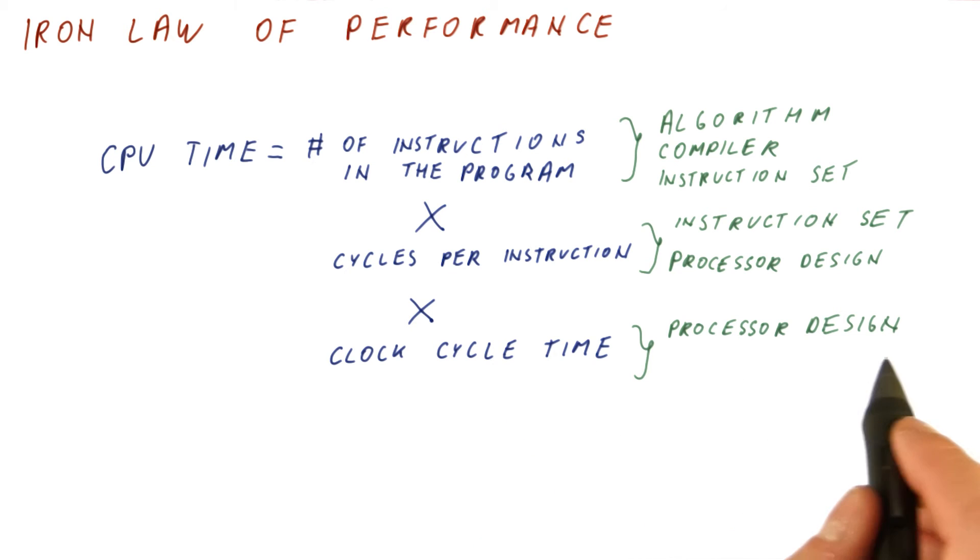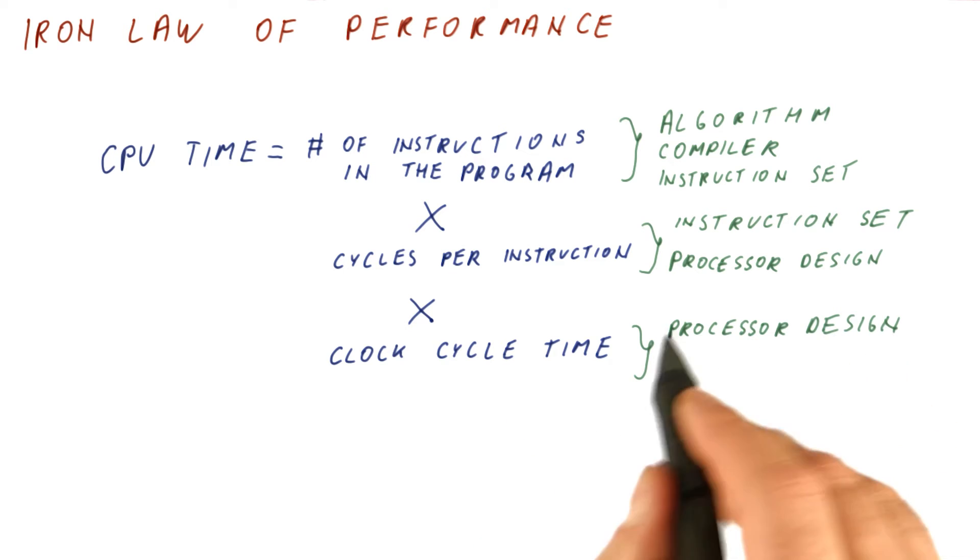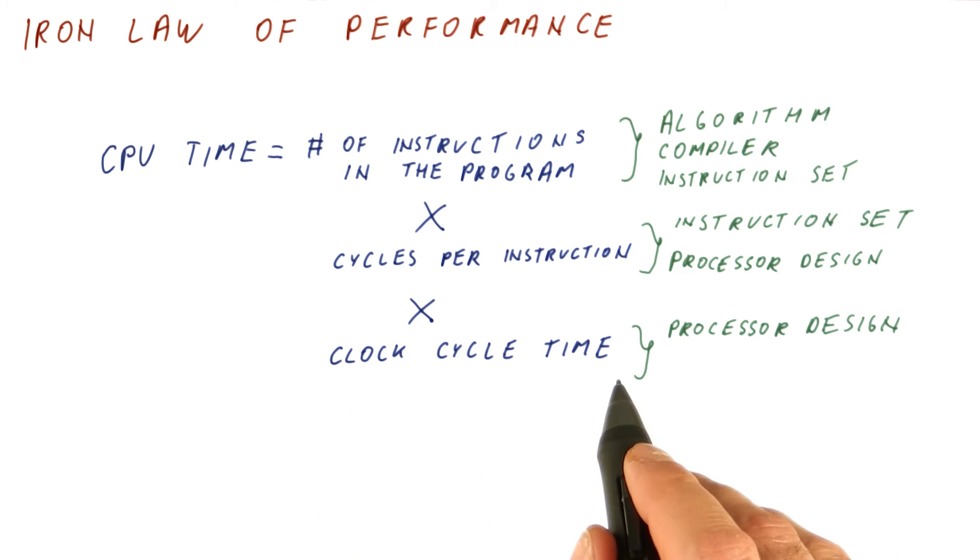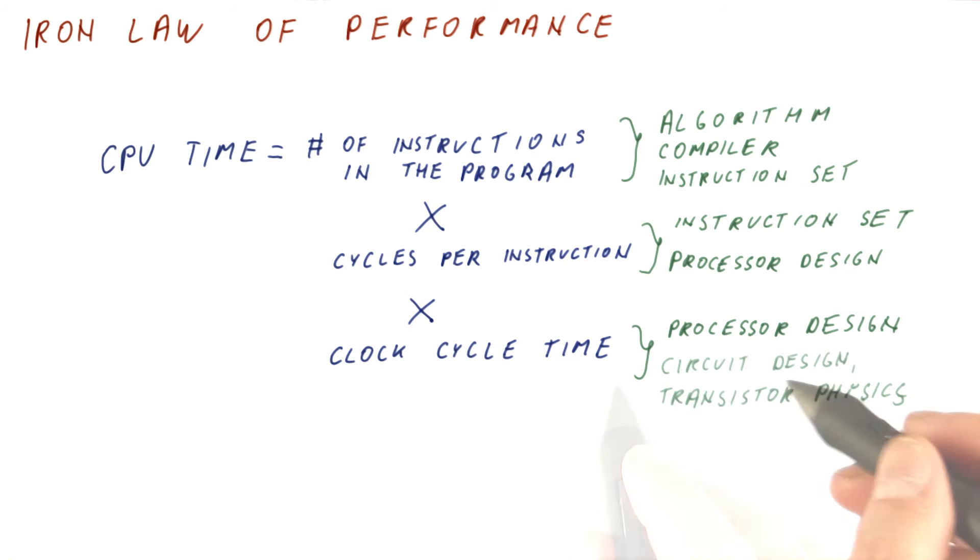And finally, clock cycle time is also affected by processor design. We can design a processor so that it does very little per clock cycle, thus spending less time per clock cycle.